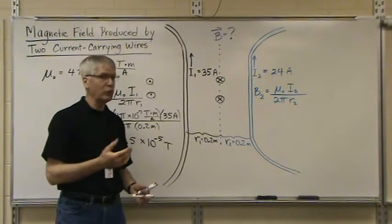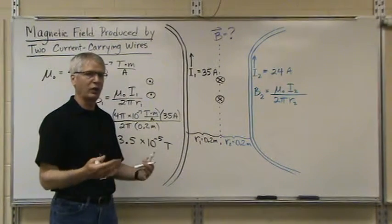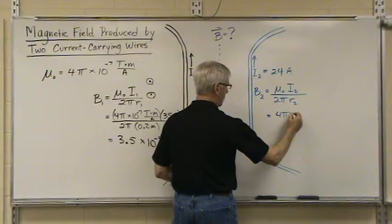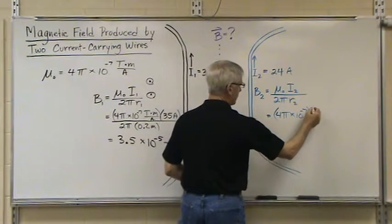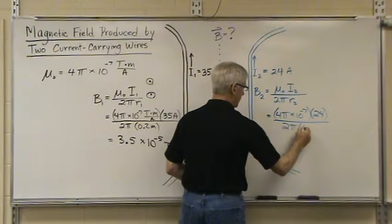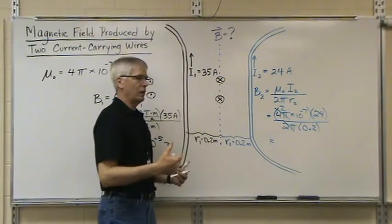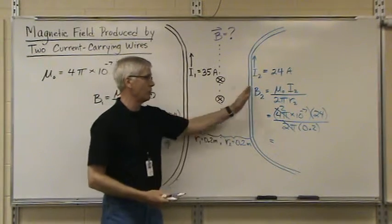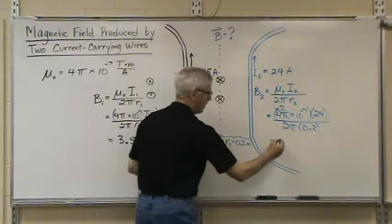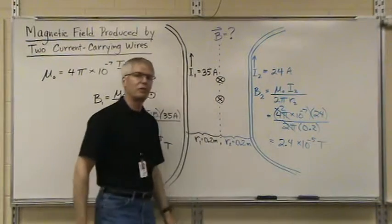For wire number two, we use the same equation. Put in the appropriate values. This time I'll leave off the units. We'll just use the numbers and come up with the magnetic field in Tesla. The value for the magnetic field created by wire two at this distance of 0.2 meters from it is going to be equal to 2.4 times 10 to the minus fifth tesla.